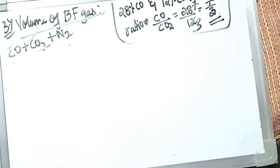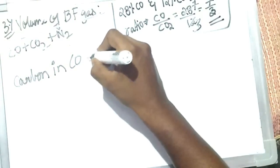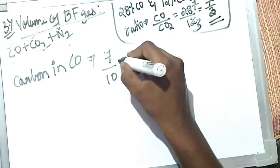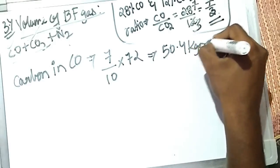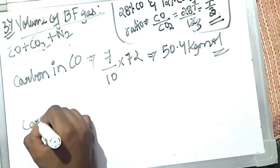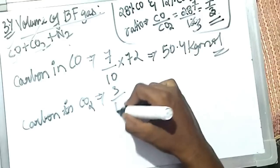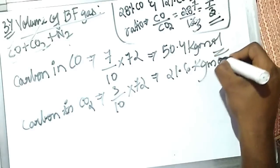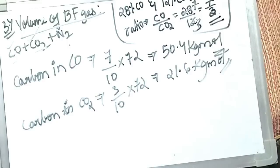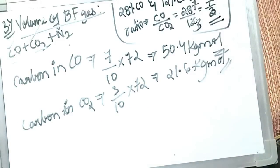With 72 kg moles of carbon split in ratio 7:3 (total 10 parts): carbon in CO = (7/10) × 72 = 50.4 kg moles of CO. Carbon in CO₂ = (3/10) × 72 = 21.6 kg moles of CO₂.